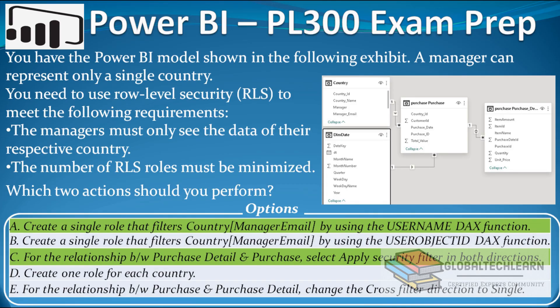Now let's go back to our question. Option A — create a single role (the country role we created) using the USERNAME DAX function — is the correct option. Option B — using USEROBJECTID — is incorrect as it returns a technical ID not present in the data. Option C — for the relationship between purchase detail and purchase, select apply security filter in both directions — is correct, since selecting both directions allowed us to filter data as per the role. Option D — creating a role for each country — is incorrect as it contradicts the minimization requirement. Option E — changing the cross filter direction to single for the purchase to purchase detail relationship — will not work as we needed both directions.